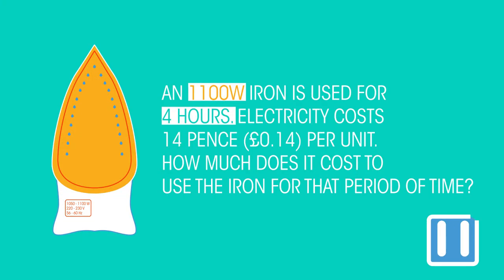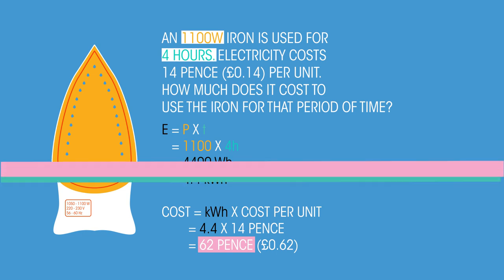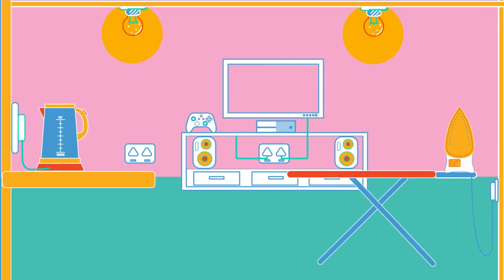Try this example. Pause the video while you work it out. Did you get 4.4 kilowatt hours and so a cost of 62 pence? So perhaps you can now see why you get nagged to switch off devices — it saves money and also helps us waste less energy.